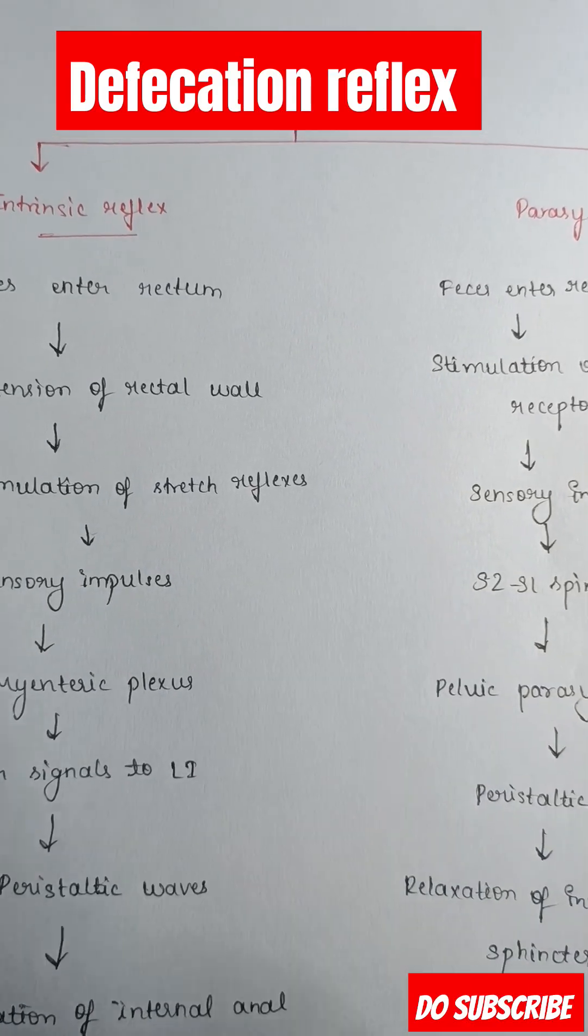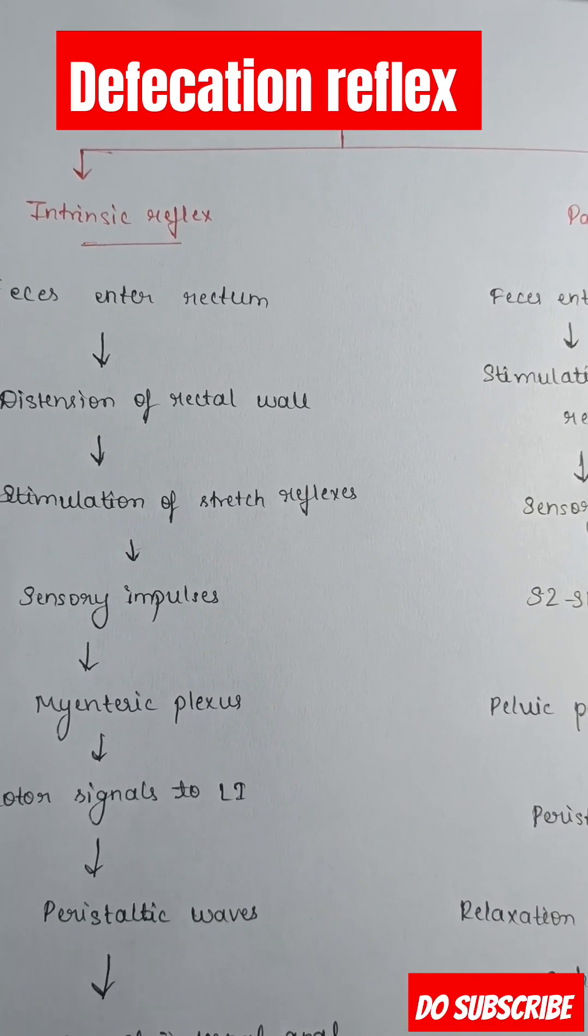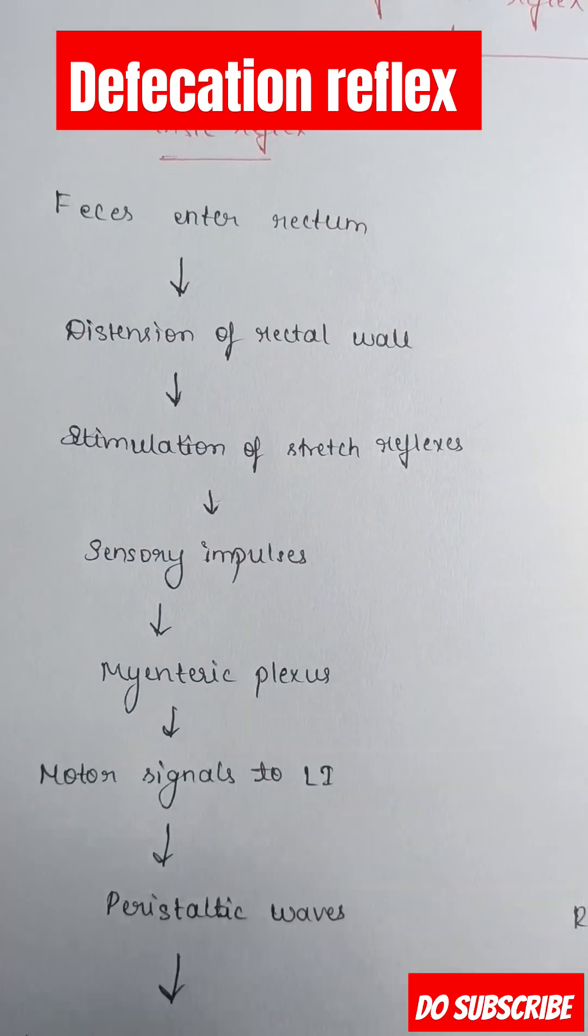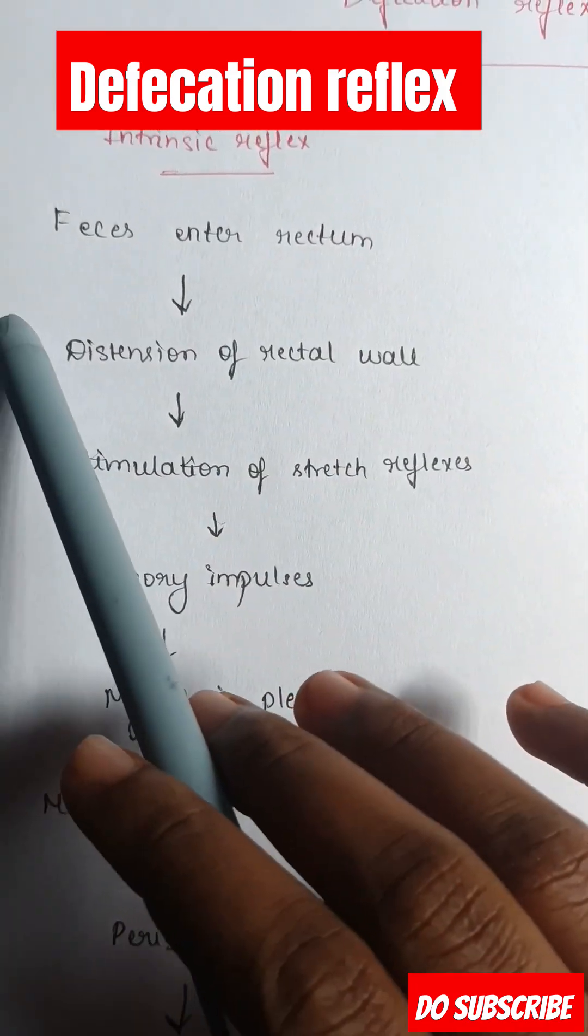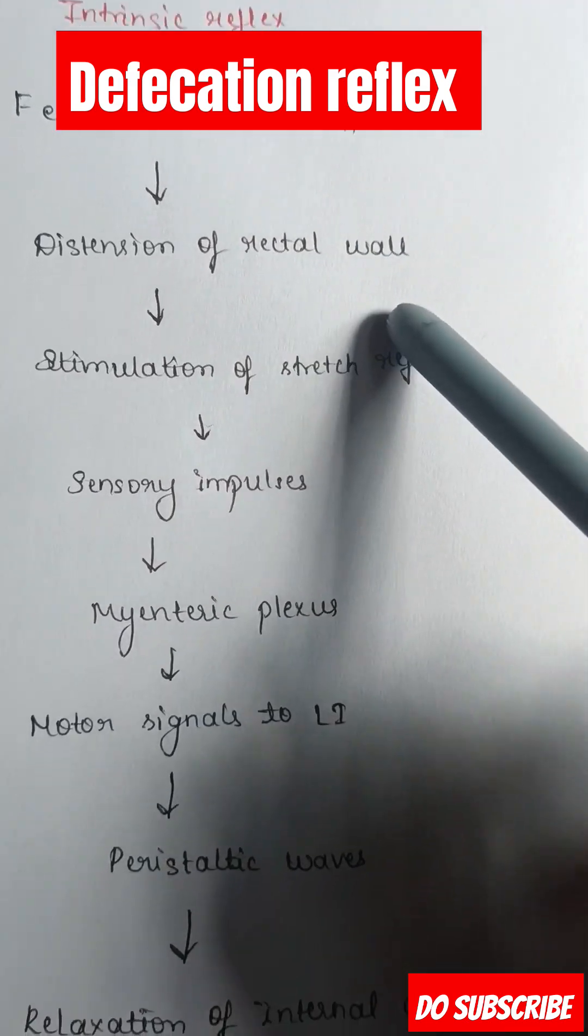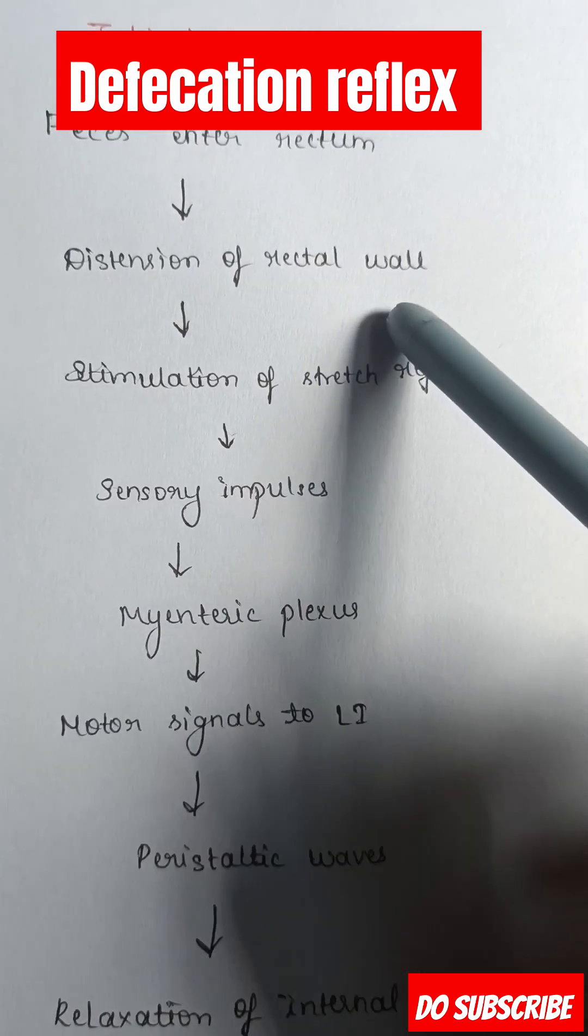We will see about defecation reflex. It takes place in two forms: intrinsic reflex and parasympathetic reflex. First, we'll see the intrinsic reflex. First, feces enter the rectum, after which distension of the rectal wall takes place. This causes the stimulation of the stretch reflexes.